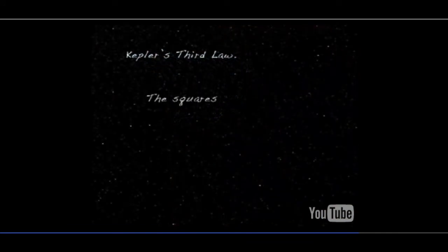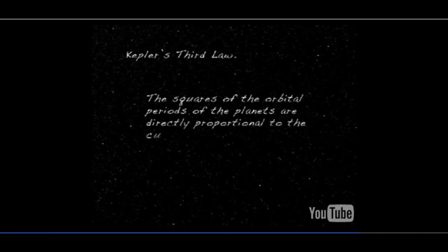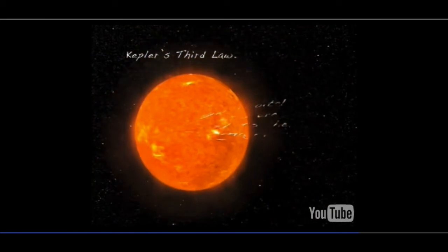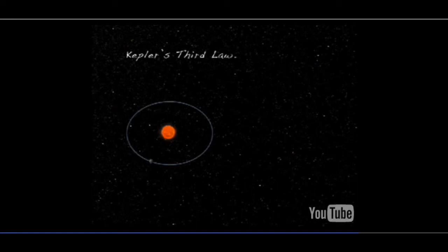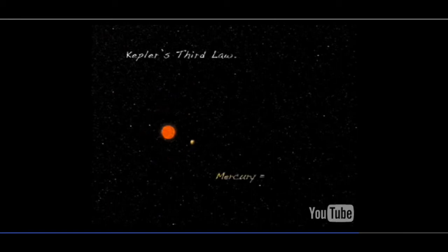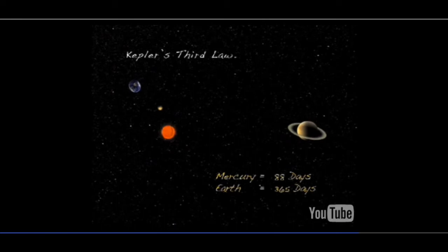Kepler's third law: the squares of the orbital periods of the planets are directly proportional to the cubes of the semi-major axes of their orbits. Kepler's third law implies that the period for a planet to orbit the sun increases rapidly with the radius of its orbit. Thus, we find that Mercury, the innermost planet, takes only 88 days to orbit the sun, the Earth takes 365 days, while Saturn requires 10,759 days to do the same.